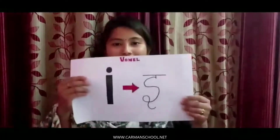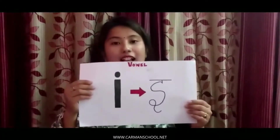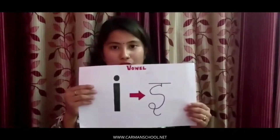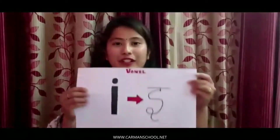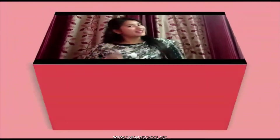Today I'm here to teach you our third vowel, that is 'I', and the sound of this vowel is 'E'. The sound of this vowel is 'E'. Repeat with me: 'E'. Again: 'E'. Very good. Now today we are going to learn three letter words with the help of the vowel I. So let's start.